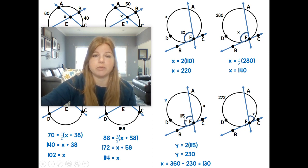You could also subtract 115 from 180 and get 65. And then if this angle is 65 and you double it to get the arc, you'll also get 130.